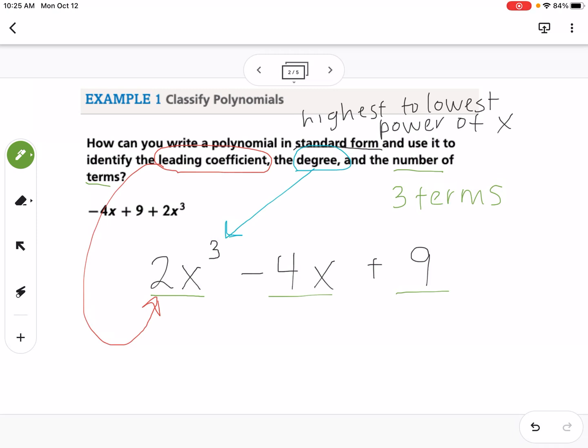If there were only two terms, it would be a binomial. If there's only one term, it's a monomial. And then usually above three terms, we just say polynomial.